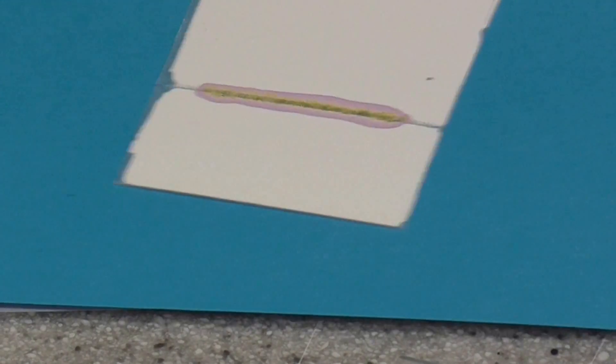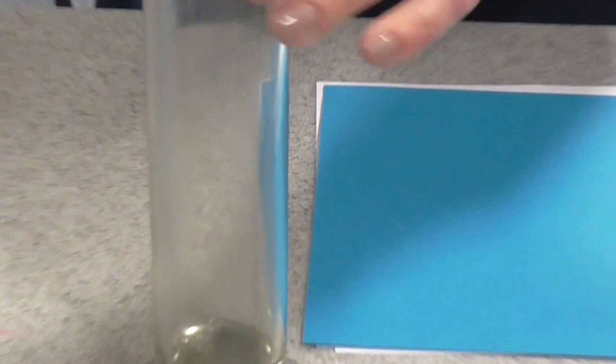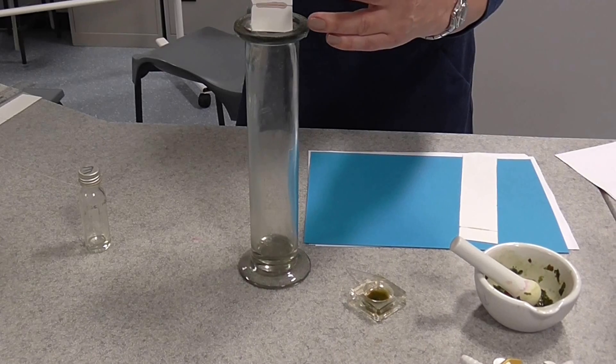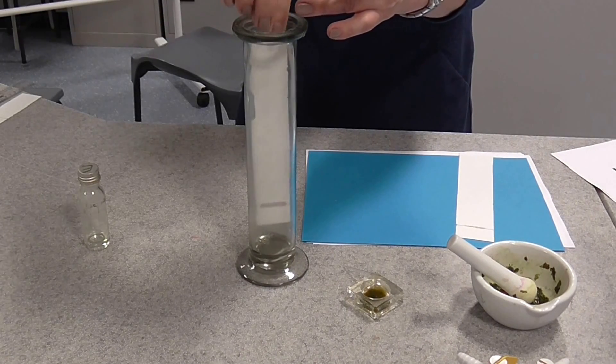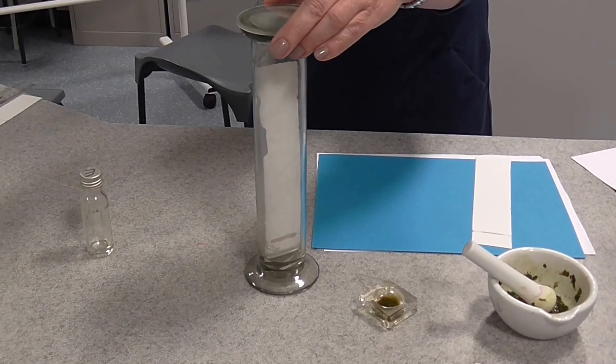Now, once you've done that and it's dried, you can actually place that and I'll do that one now inside the gas jar with the solvent. To be honest, it's better if it doesn't touch the side, so it's better down there.